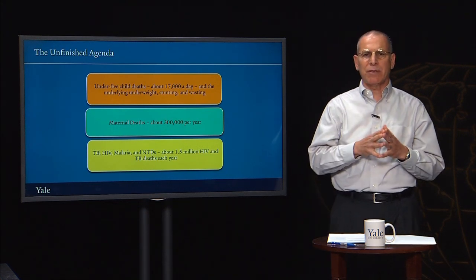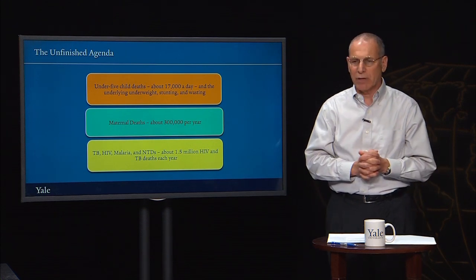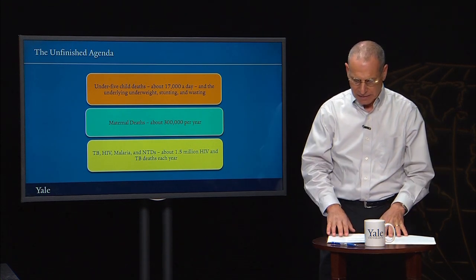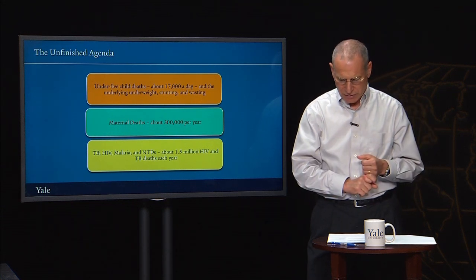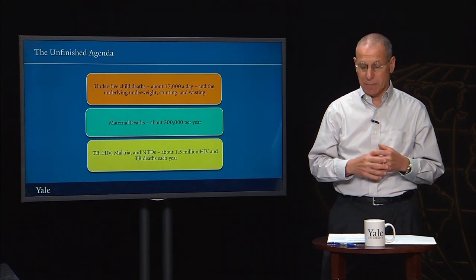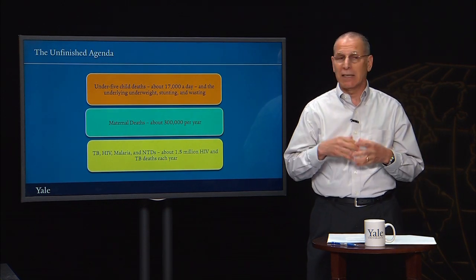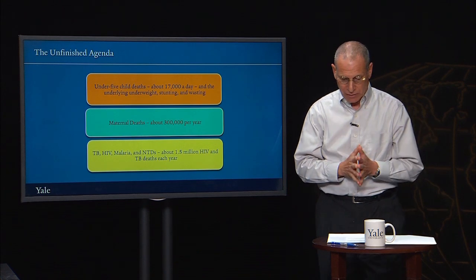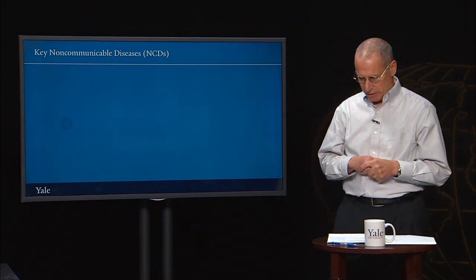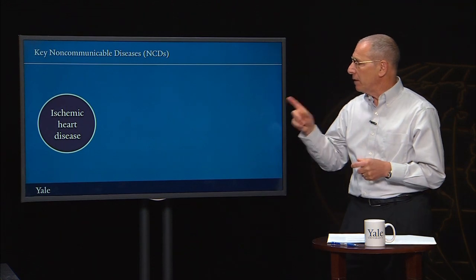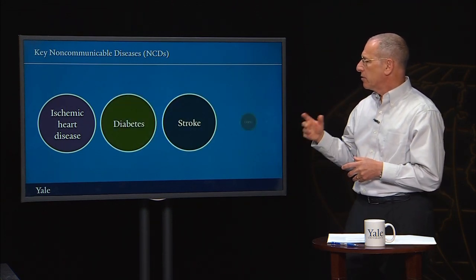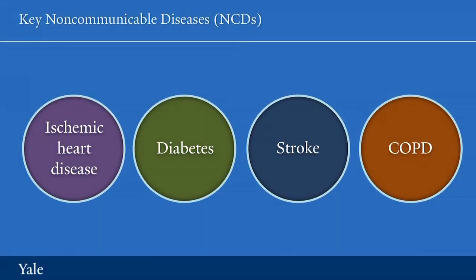Non-communicable diseases are a growing share of the burden of disease in low- and middle-income countries. In addition, they occur at younger ages in these countries than in high-income countries, and they have higher death rates in low- and middle-income countries as well. The most important non-communicable diseases will be ischemic heart disease, diabetes, stroke, and chronic obstructive pulmonary disease. Along with these, it's essential to note that hypertension is an extraordinarily important risk factor for non-communicable diseases.